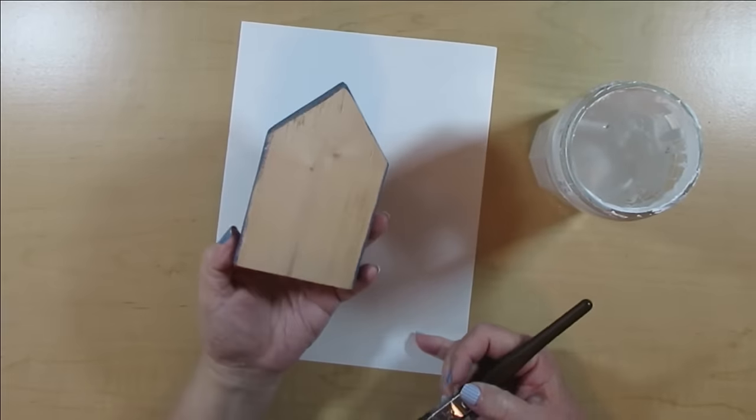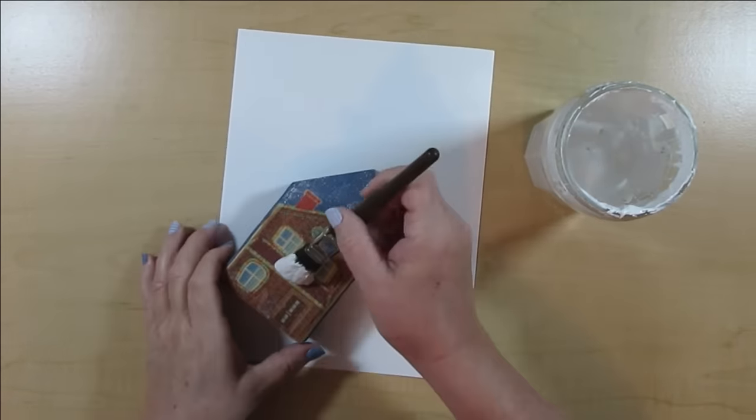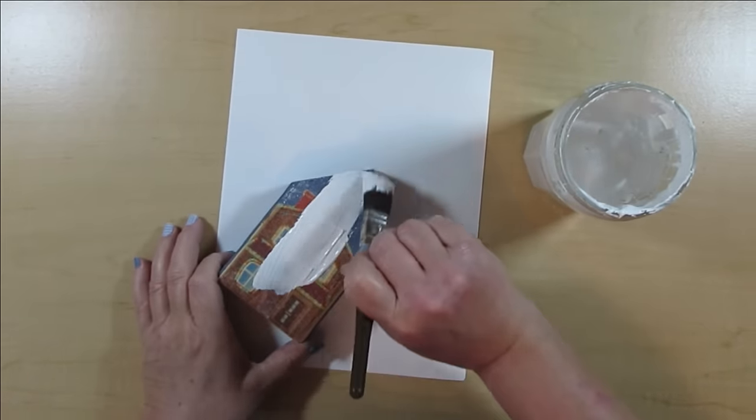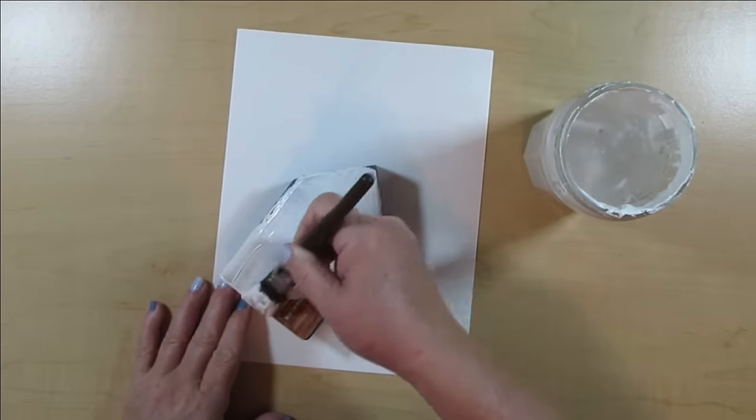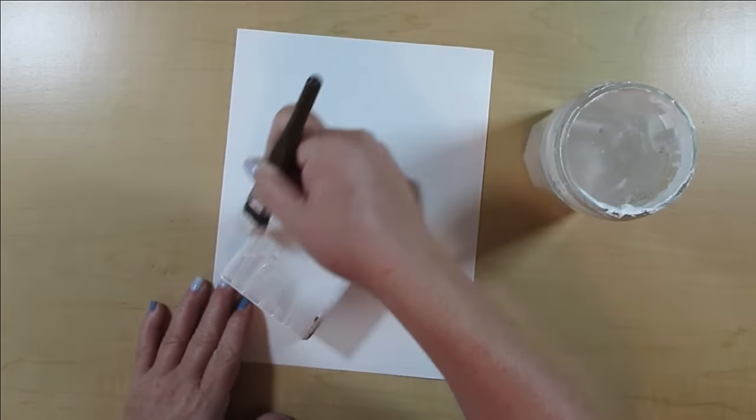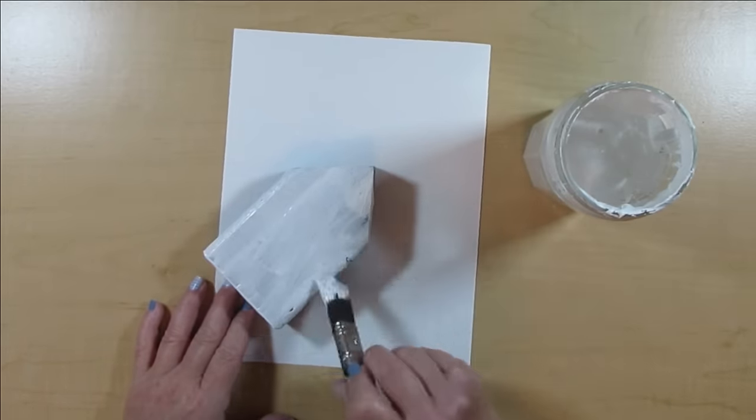For this project, I'm going to do something I have never tried before. The first thing I'm doing is just painting this 2x4 that has been cut into a house shape. Just something I had in my stash and I love to repurpose things when I'm done decorating with them and just change things up for every season. So it's just going to get a couple of coats of white chalk paint.